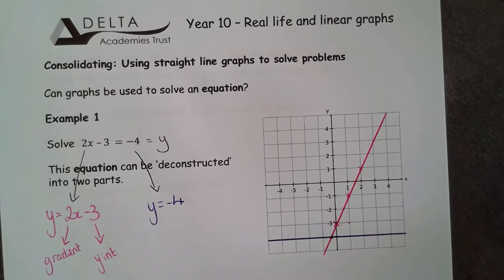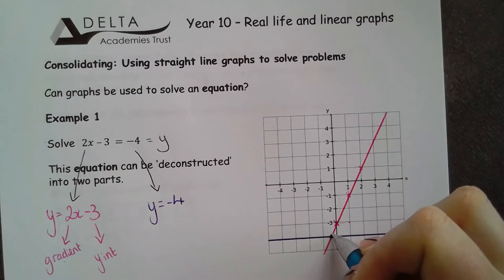I've now got to find where these two things are equal. The place that they're equal is their point of intersection. This point here.